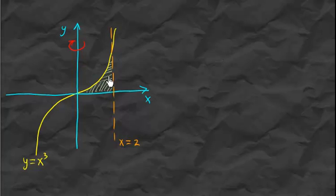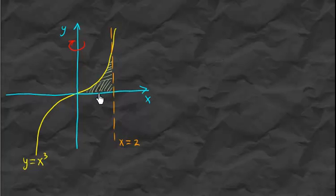The next problem uses the same region bounded by x cubed, the x-axis, and the line x equals 2, but now we want to revolve the region about the y-axis. We slice the region vertically like before.